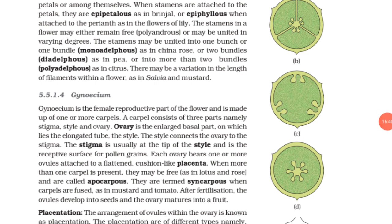Gynoecium is the female reproductive part of the flower and is made up of one or more carpels. A carpel consists of three parts namely stigma, style and ovary. Ovary is the enlarged basal part on which lies the elongated tube, the style. The style connects the ovary to the stigma. The stigma is usually at the tip of the style and is the receptive surface for pollen grains. Each ovary bears one or more ovules attached to a flattened cushion-like placenta.